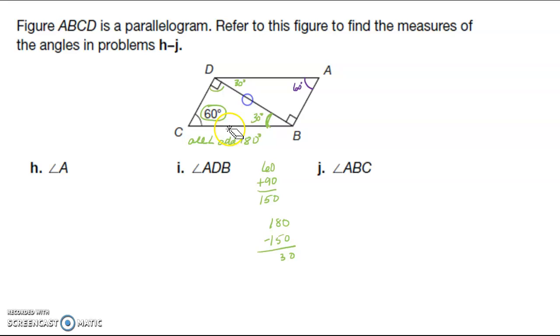All right, so let's look at what we have. So we have angle A—angle A is the same as angle C, so this is 60 degrees. ADB, so we have A, D needs to be in the middle, B is right there, so they're asking for this angle, which I've already figured out is 30 degrees.